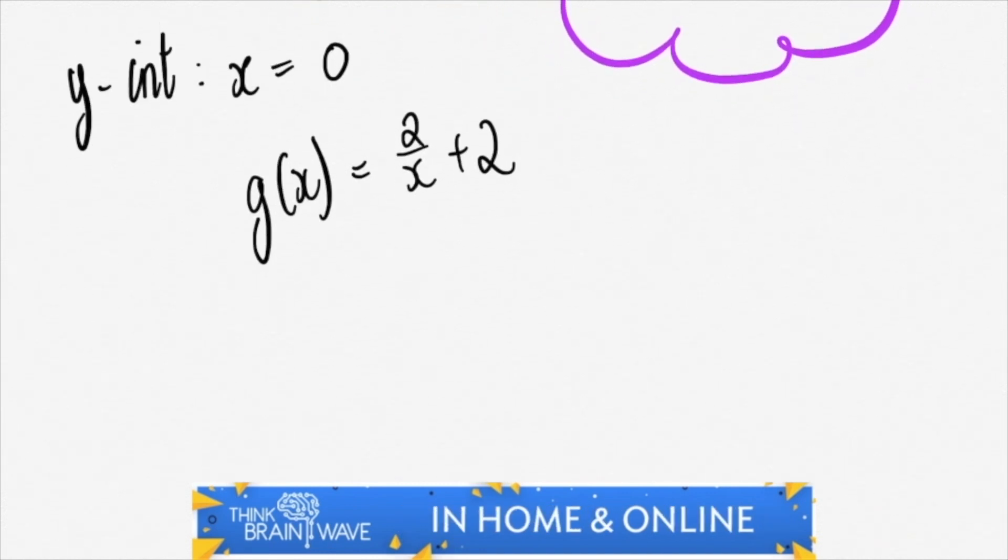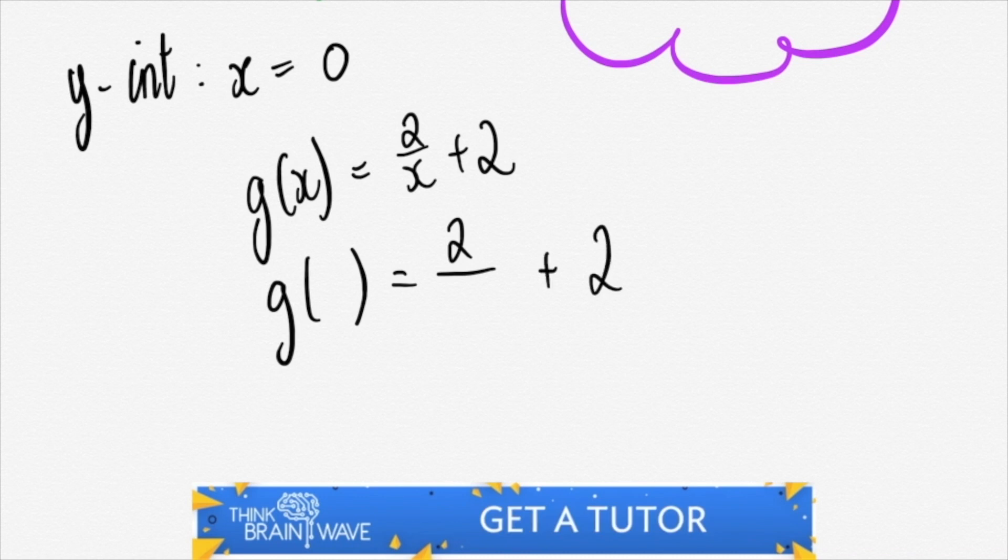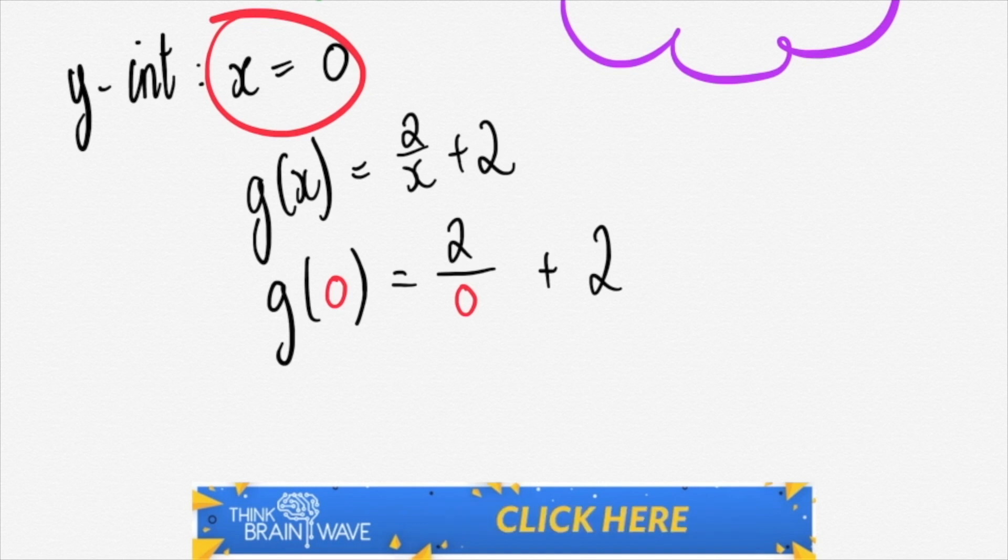And as we can see that that answer would be undefined. So let's sub it in. We have 2 over 0. So g of 0, we say 2 over 0, which we know is undefined. This gives us an undefined answer.